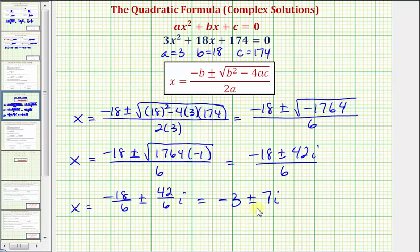Now in the homework, we do enter these separately. Our first solution, x sub 1, is going to be equal to negative 3 minus 7i. And our second solution will be x sub 2 equals negative 3 plus 7i.